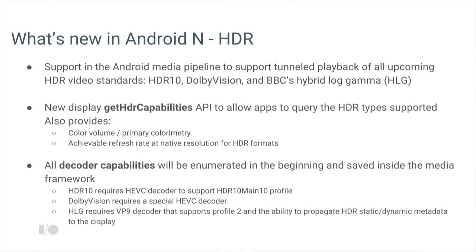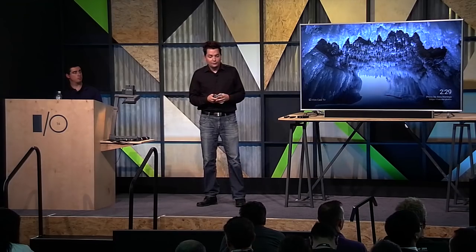Another really important topic for Android N is supporting HDR — high dynamic range — properly. With all the new UHD TVs, HDR became a big topic, giving the ability to display a wide range of colors in natural color schemes. One of the problems is that there are a lot of different HDR standards: HDR10, Dolby Vision, and Hybrid Log Gamma. As a consumer and content provider, it's confusing — how do I know which standard to support or what the device supports? In Android N we're adding new APIs to support HDR.